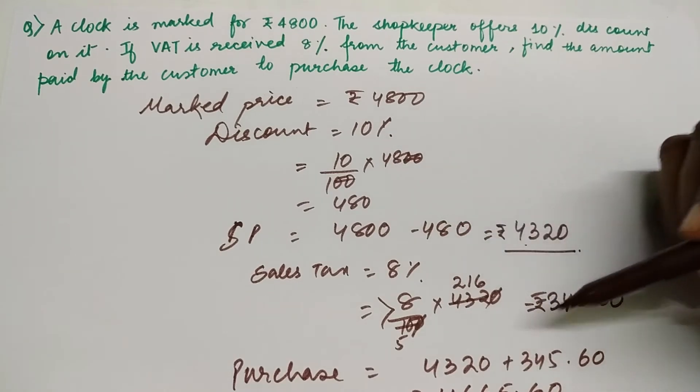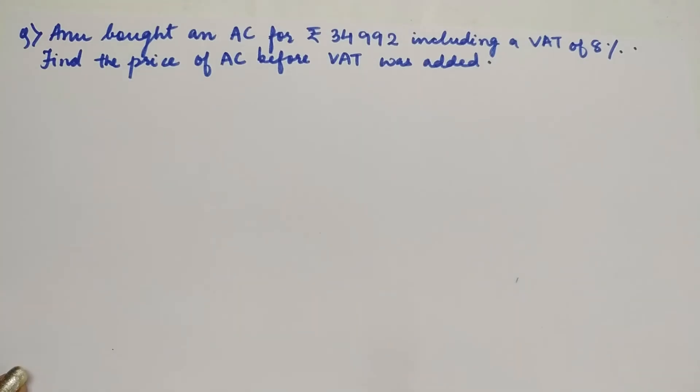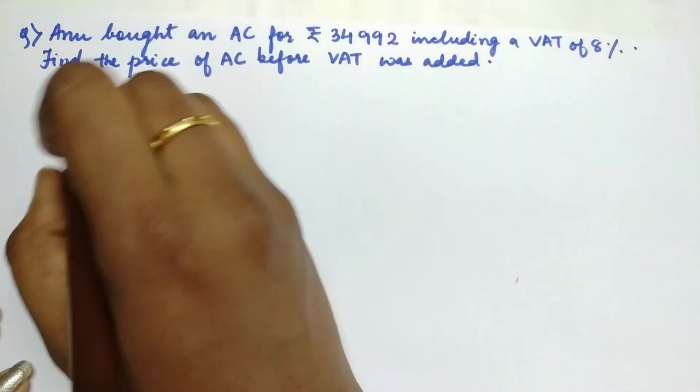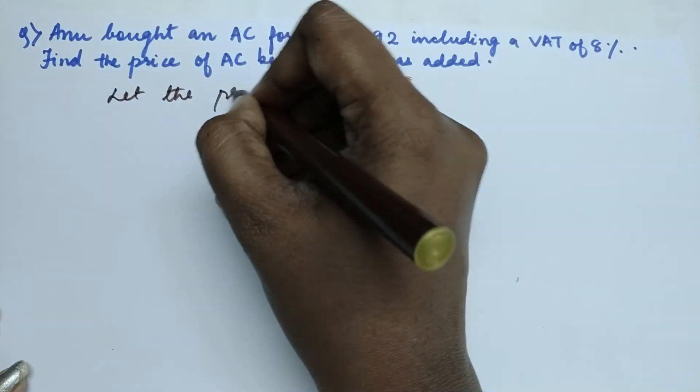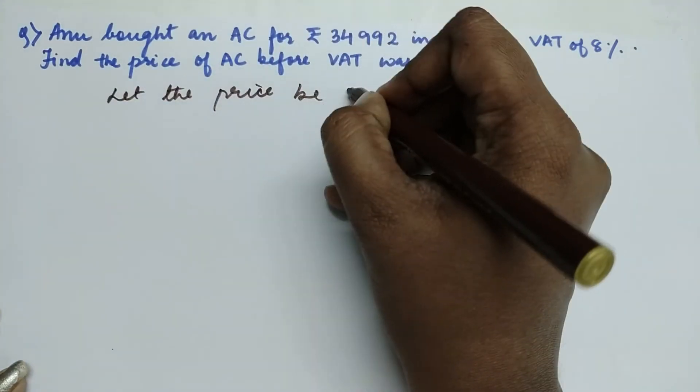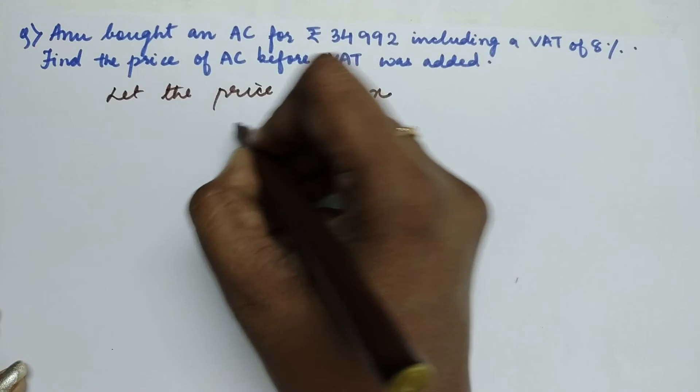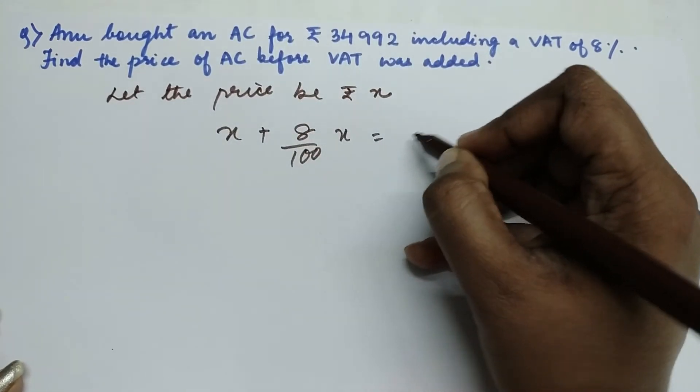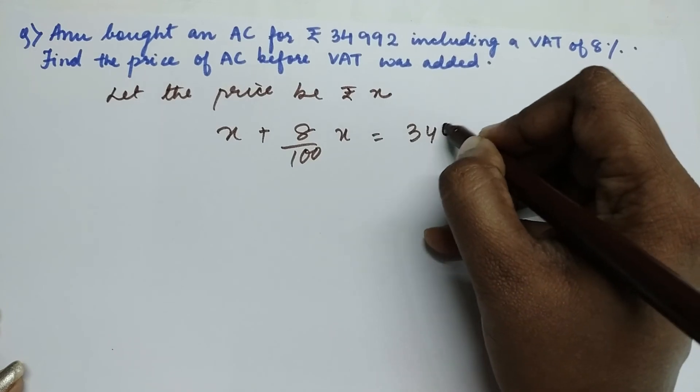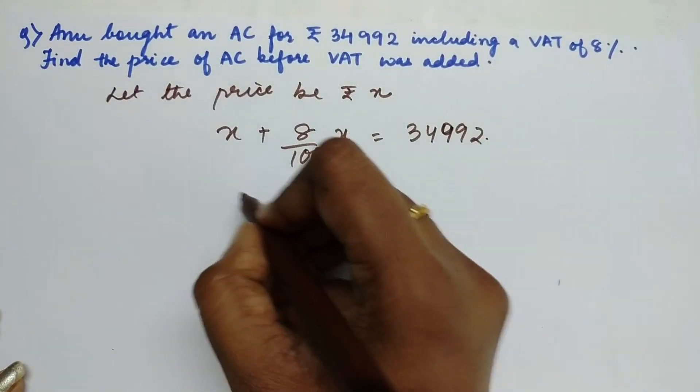Here it says that Anub bought an AC for ₹34,992 including sales tax of 8%. Find the price of the AC before VAT was added. So let the price be X. So X plus 8% of X is going to be the amount that Anu has paid.